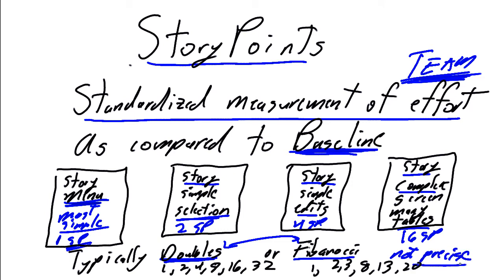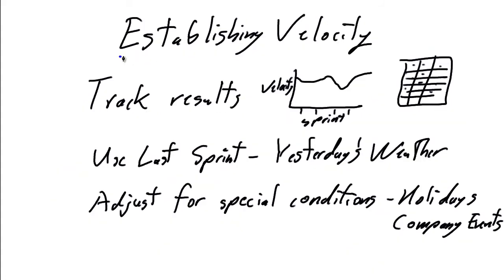And the reason we want to go with a principle like doubling or Fibonacci is it's not precise. And you may say, well Steve, you're estimating, why don't we want it to be precise? We don't have the details to be precise. We have a high level story definition. So therefore, we want to get a rough order of magnitude of the effort for the story points, and then we're going to make it better.